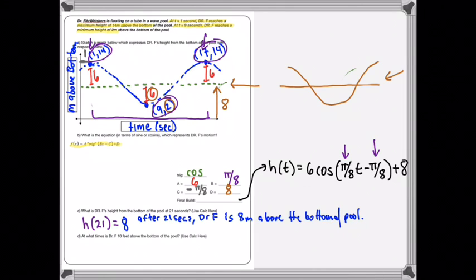It says, at what times is Dr. Fitzwhiskers 10 feet? Oops, you know what? Let's change that. That is a typo. 10 meters above the bottom of the pool. And so that means we're going to do something a little bit different. Again, I'm going to do it on Desmos, and writing the solution might be kind of tricky, like for example, naming all the x-intercepts of the sine wave and cosine wave. We're going to have to create little functions to answer this. So let's get the graph going.